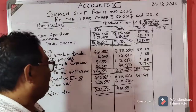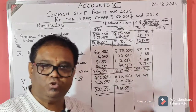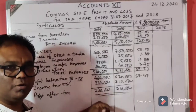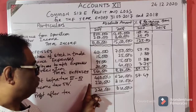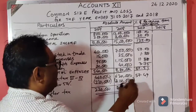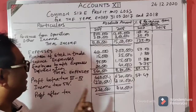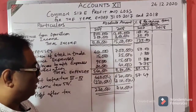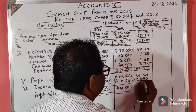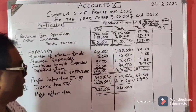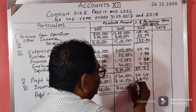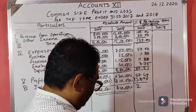Tax is 50 percent of profit before tax: 50 percent of 4 lakhs 60,000 equals 2 lakhs 30,000. Subtracting tax gives profit after tax of 2 lakhs 30,000. In percentage terms: 2 lakhs 30,000 divided by 8 lakhs into 100 gives 28.75 percent.